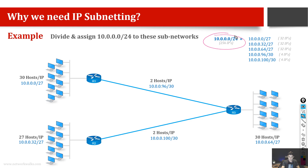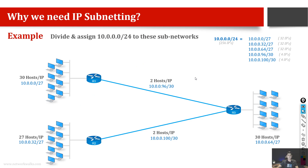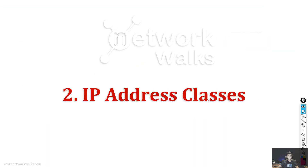For example, here we have 256 IP addresses because it's slash 24. We will see how we can divide and assign IP addresses to five subnetworks wisely, so that we don't waste IP addresses and can use them efficiently. We will study this step by step.